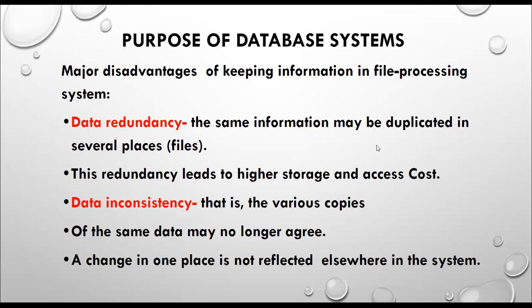The first one is data redundancy, which is one of the disadvantages in the file processing system. Taking the example of a banking system, each official will be maintaining separate ledgers or books, and the same customer's entry will be duplicated. Not only in banks, but in hospitals and colleges, every section should maintain separate files, leading to duplication of data. Redundancy means duplication of the same data at various places.